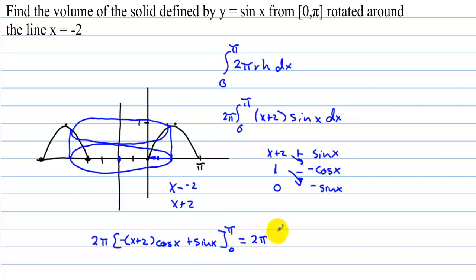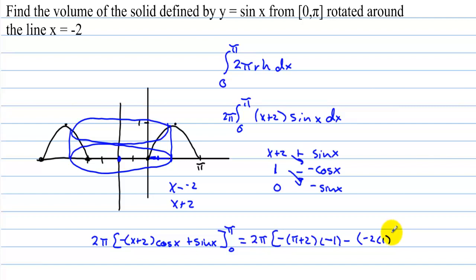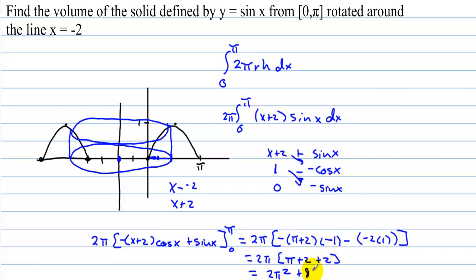Evaluating: at x equals π, we get negative(π plus 2) times cos(π) plus sin(π) equals negative(π plus 2)(negative 1) plus 0 equals π plus 2. At x equals 0, we get negative 2 times cos(0) plus sin(0) equals negative 2 times 1 plus 0 equals negative 2. So we have 2π times [(π plus 2) minus (negative 2)] equals 2π times (π plus 4), giving 2π squared plus 8π.